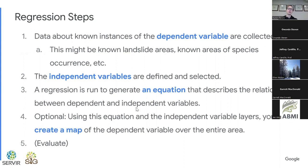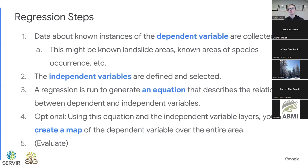Generally, regression in Earth Engine — and more broadly, but particularly in Google Earth Engine — breaks down into five steps. The first one is to put together data about known instances of the dependent variable. This is your training data. It might be, for example, known areas of species occurrence, known areas of tree canopy cover, known landslide areas — anything that has that dependent variable.